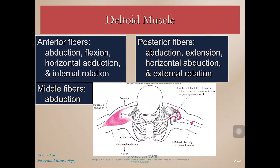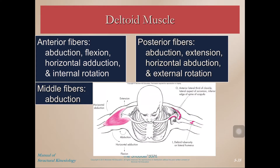First, let's talk about the deltoid muscle. The deltoid has three heads — the anterior, middle, and posterior. Because of the arrangement of these fibers, it has differential effects on the shoulder joint. The anterior fibers produce abduction, flexion, horizontal adduction, and internal rotation. As I'm saying these actions, go ahead and try to do them yourself — abduction away from the body, flexion moving forward in the sagittal plane, horizontal adduction, and internal rotation.